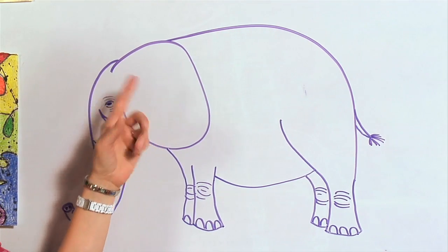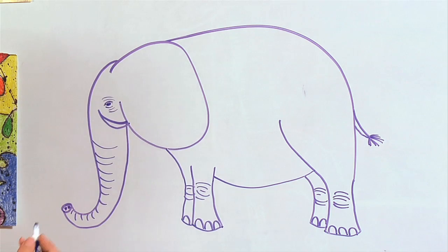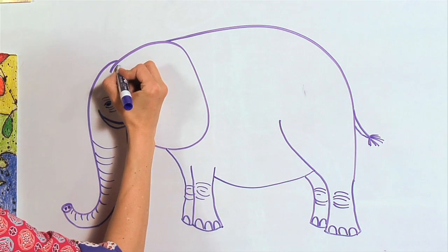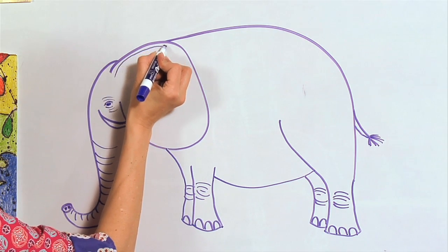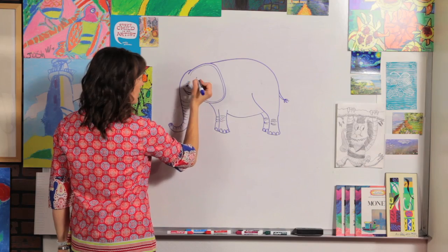Now if you want to, we can draw just a little bit of the inside of the ear. We're going to follow this same line really close to the first one we drew. So just like this.